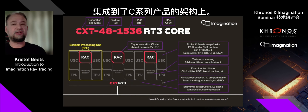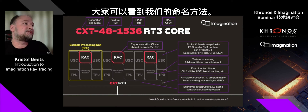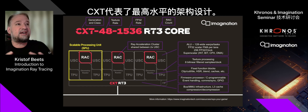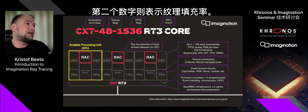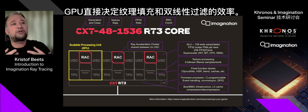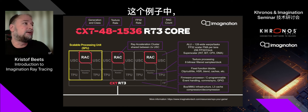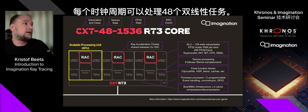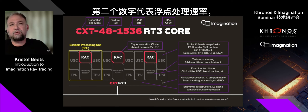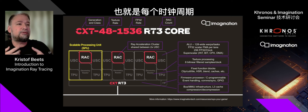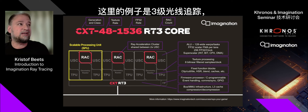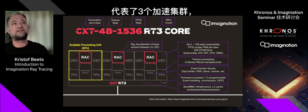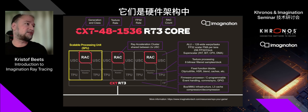Ray tracing integration is something that we did in our C-series architecture. In the naming — for example CXT — XT is the higher end of our architecture and the C letter is the generation. The second number is our texturing rate, controlling how much bilinear filtering you can do — in this case, 48 bilinear samples per clock. The next number is the floating-point processing rate: how many floating-point operations we can do per clock cycle. Finally, you see the ray tracing amount — ray tracing level three, meaning three ray acceleration clusters.